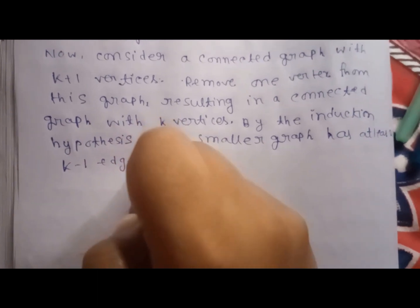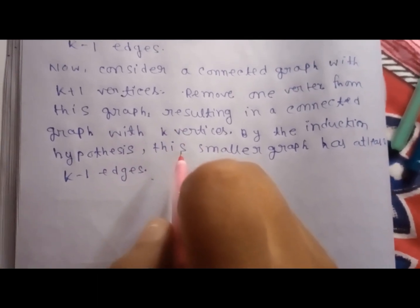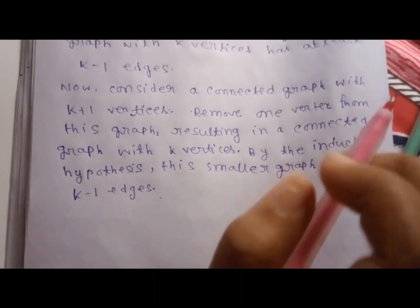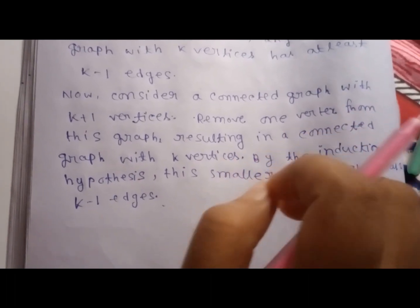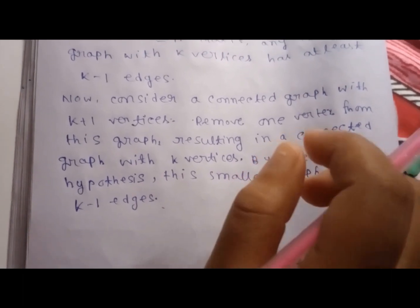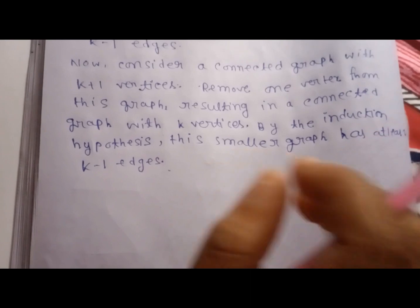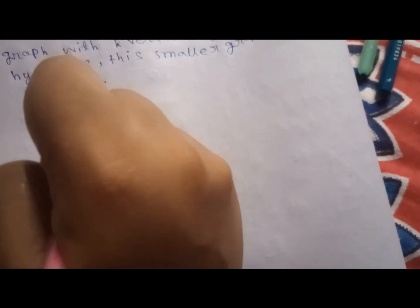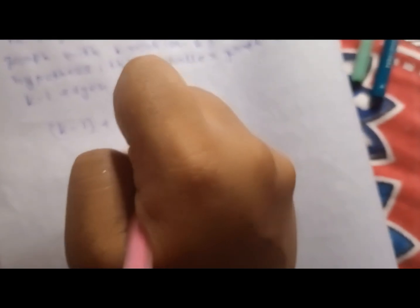When we add back the removed vertex, we need to add at least one edge to connect it to the rest of the graph. Therefore, the total number of edges in the graph with k plus 1 vertices is at least k minus 1 plus 1, which equals k.